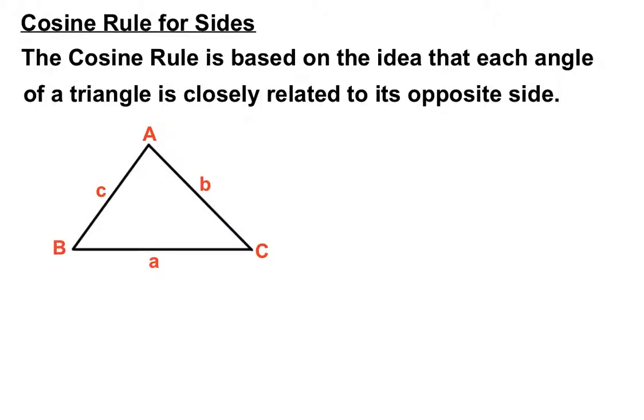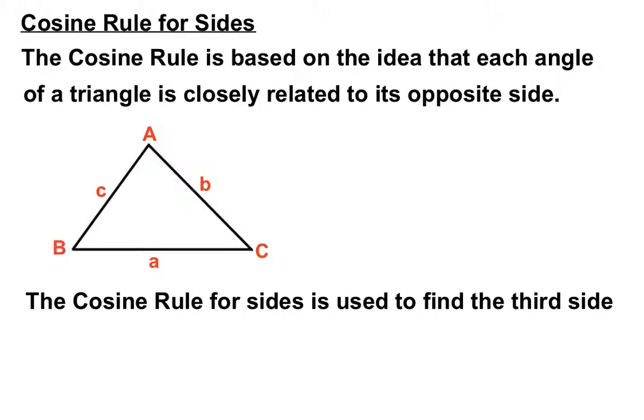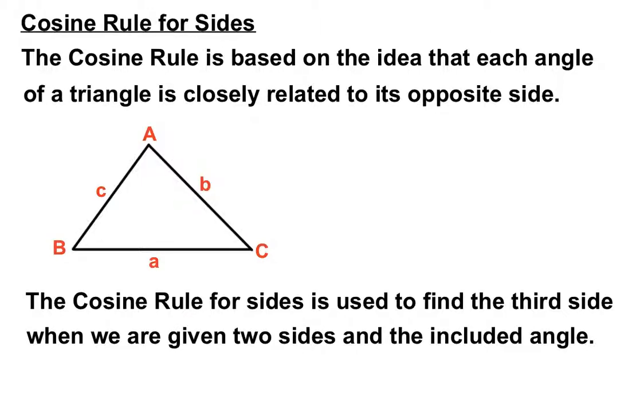As we can see here, the cosine rule for sides is used to find the third side when we are given two sides and the included angle. We'll see that that included angle is the angle that's in between the two sides that we are given.